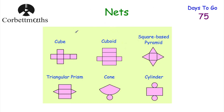Next, let's look at nets. The net of a cube looks like a cross of six squares — you may have folded one together in lessons. The net of a cuboid depends on its dimensions. The net of a square-based pyramid has a square base with four triangles that fold up to meet at the top. The net of a triangular prism has two triangles and three rectangles. For a cone, the curved part rolls around and the circle forms the base. For a cylinder, the rectangle rolls into the curved face and the two circles go on the top and bottom.